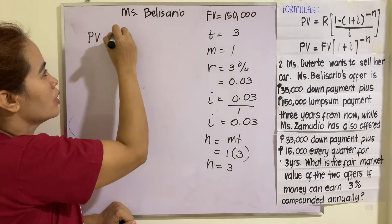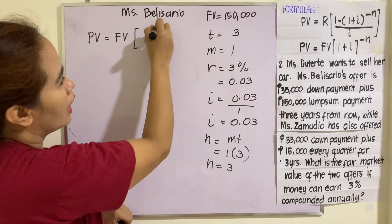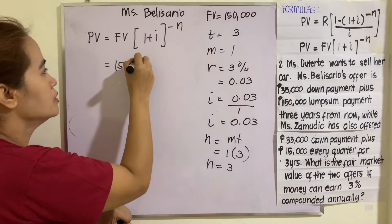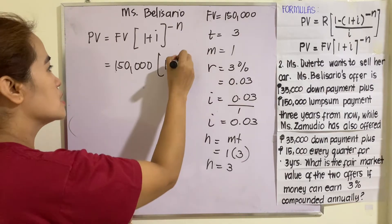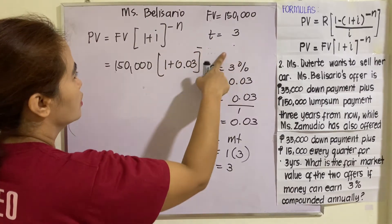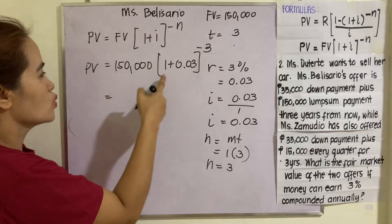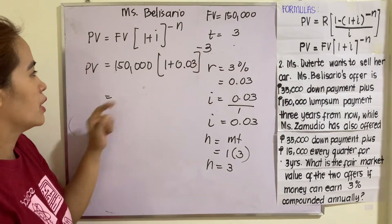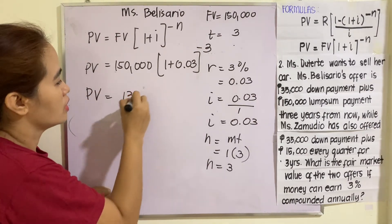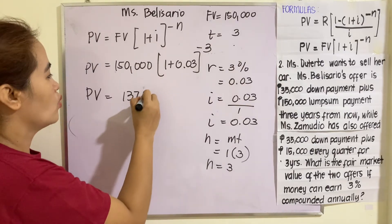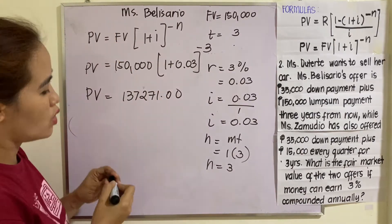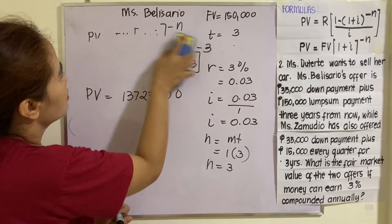Using the second formula: PV equals FV multiplied by (1 plus i) raised to negative n. So FV is 150,000, multiplied by (1 plus 0.03) raised to negative 3. Press 1.03 raised to negative 3 and multiply by 150,000. You get 137,271.00. That is Miss Belisario's offer.